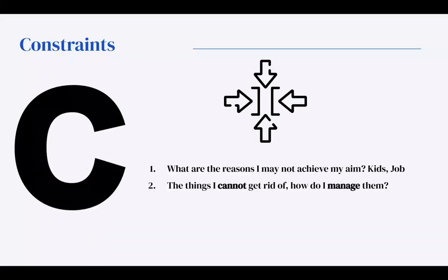Now, it doesn't matter who you are. Everyone has constraints. A constraint is a reason that you may not achieve your aim. And this could be anything. From, I've got a job. I've got kids. I live in a place where there's no power. Practical things. So, the things I cannot get rid of. How do I manage them? So, the question is, all your constraints. How do you manage them? Again, I'll ask Ruby. How do you manage your constraints, Ruby? What were they to start with? And how do you manage them?